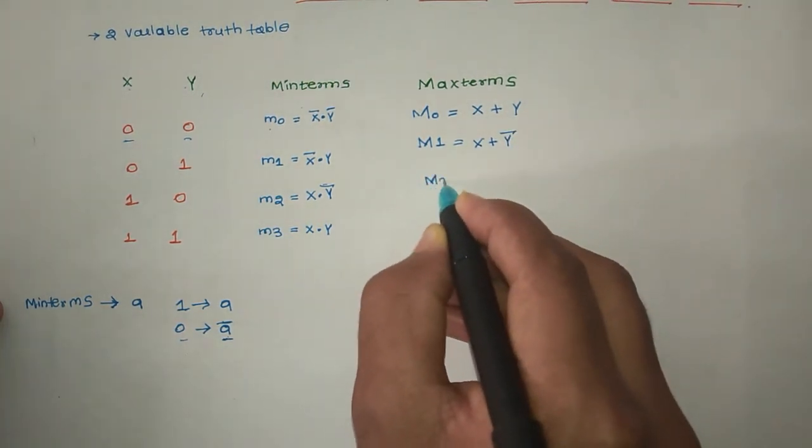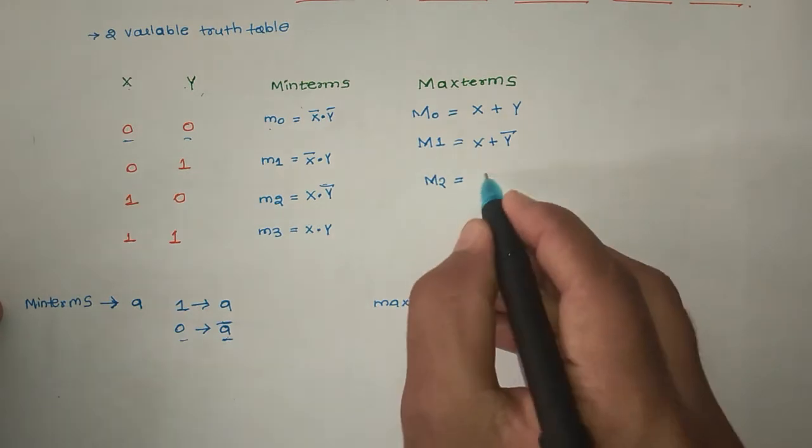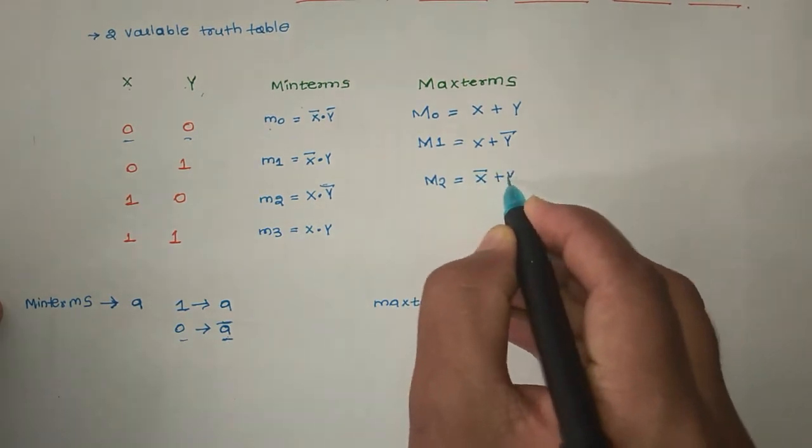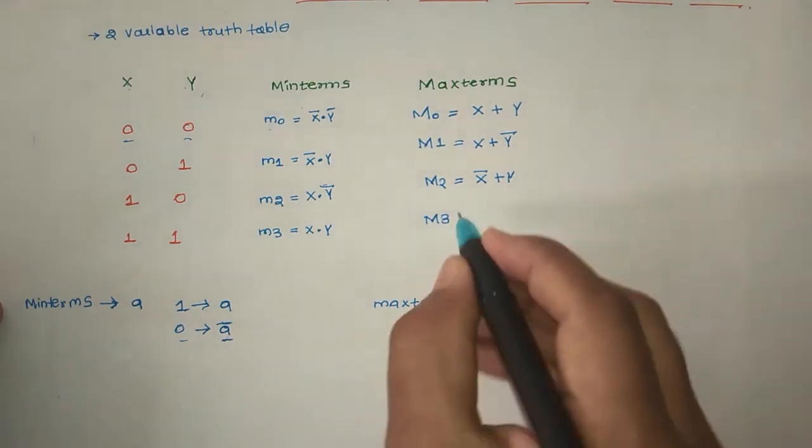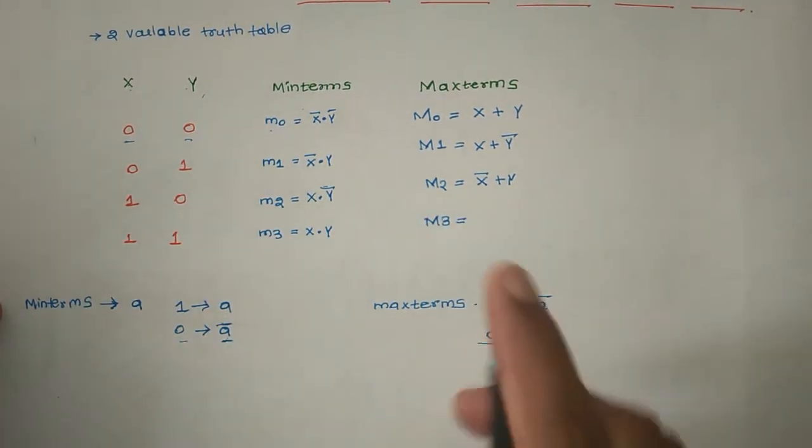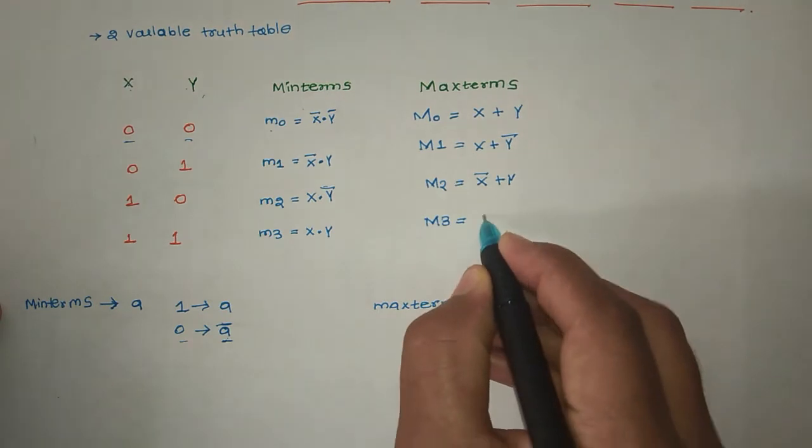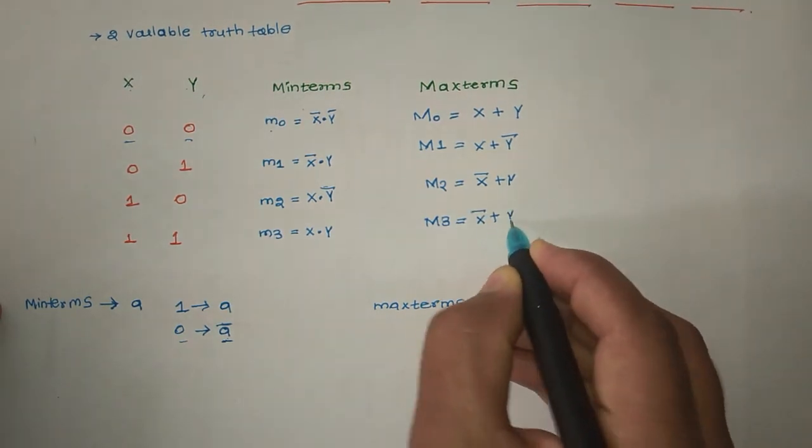Similarly, M2 equal to X bar plus Y. Next M3 equal to: both are ones, that means we have to take the complement of both and sum it. X bar plus Y bar.